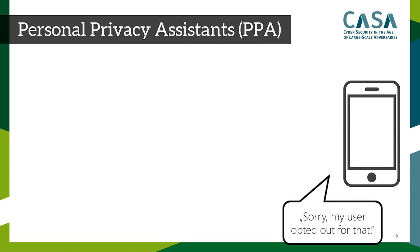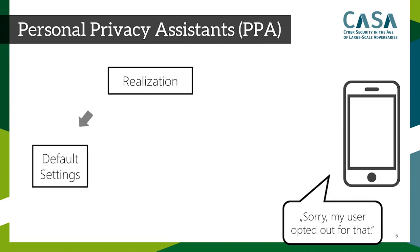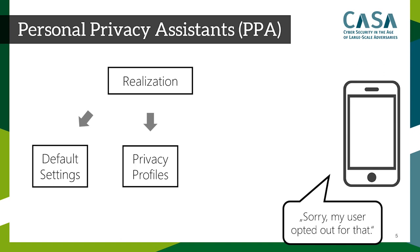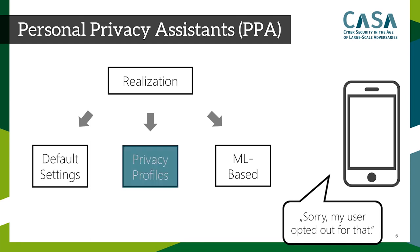We found several ways to realize PPAs in the literature. One idea was using default privacy settings that the user configures during installation. The second were privacy profiles that represent user archetypes. And finally, there's machine learning as a possible solution. Since default settings were very cumbersome and machine learning might be challenging for users to predict, we chose to investigate privacy profiles in our specific study.